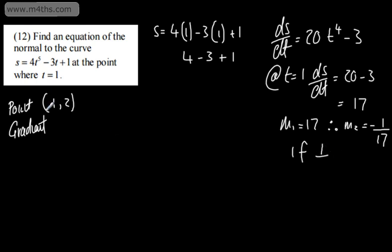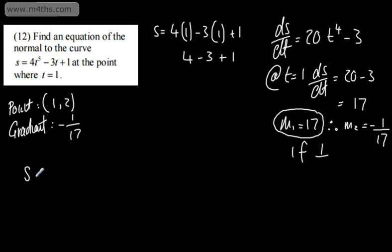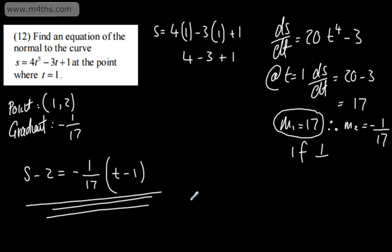So we have the point and the gradient of the normal, which is negative 1 over 17. I found ds/dt = 20t⁴ - 3, substituted t = 1 to get the gradient of the tangent, then took the negative reciprocal for the normal: negative 1 seventeenth. The equation of the normal is: s minus 2 equals negative 1 over 17 times (t minus 1). That is an equation — I'm not going to tidy it up further as it's just asked for an equation.